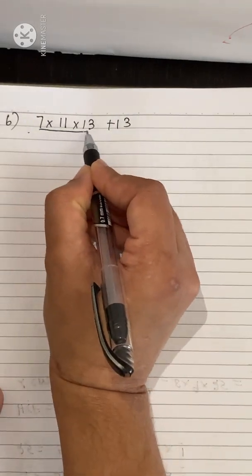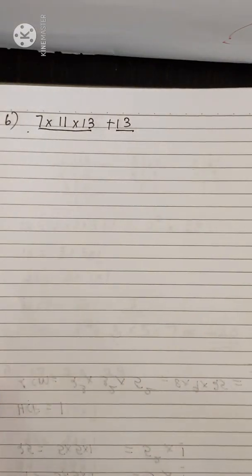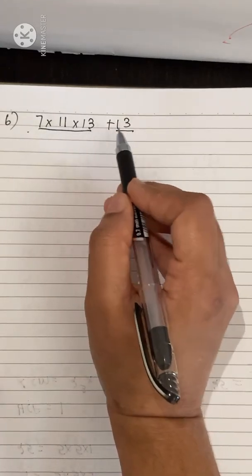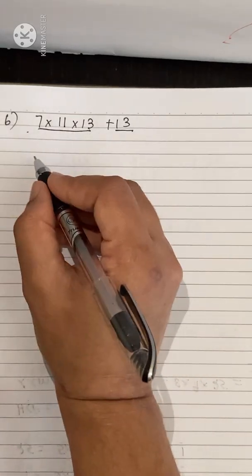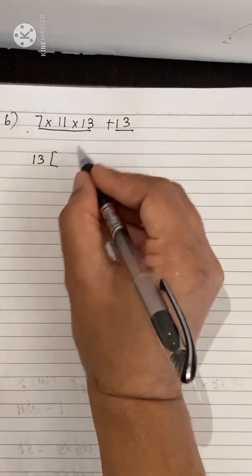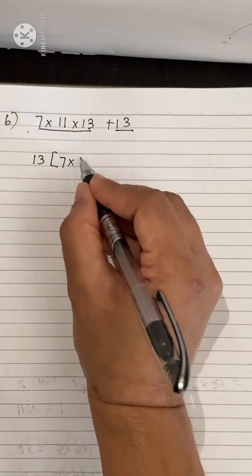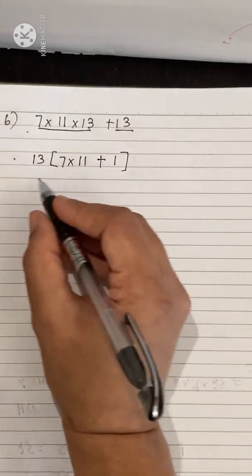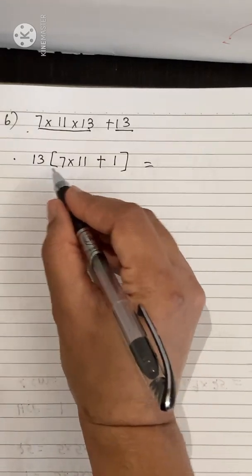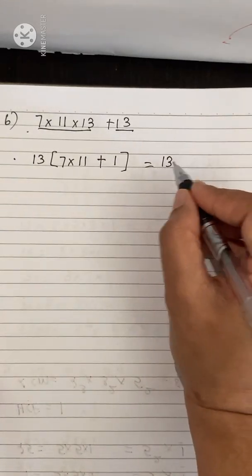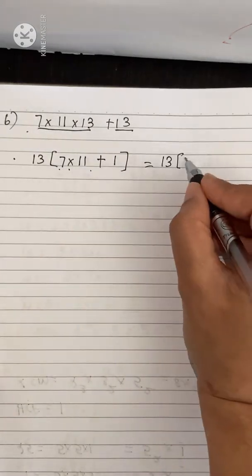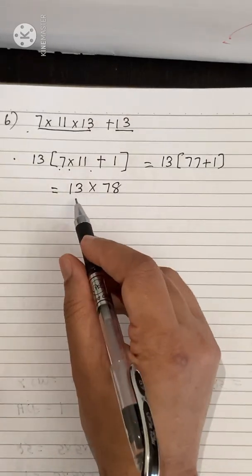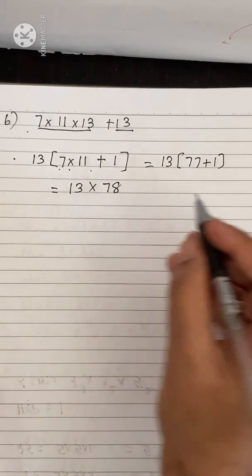For the first expression, take the first part as one term and 13 as the second term. We can see that 13 is common in both terms. Take 13 outside: 13 into (7 times 11 plus 1). That gives 13 into (77 plus 1), which equals 13 into 78.